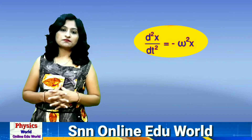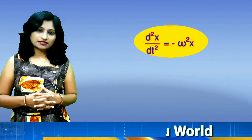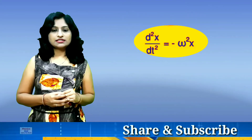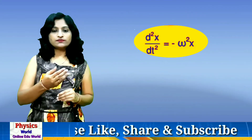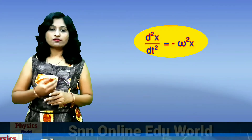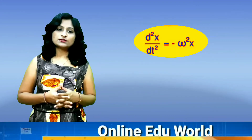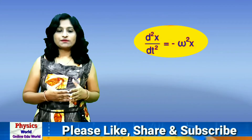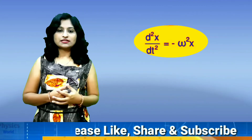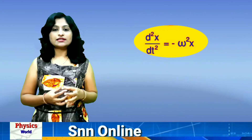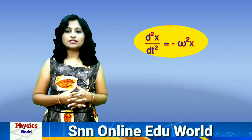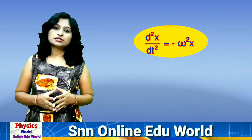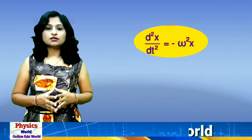Directly from this equation we can get the acceleration. d²x/dt², if we shift +ω²x to the other side, it will become -ω²x. So d²x/dt², which is nothing but the acceleration, equals -ω²x. This is the acceleration for simple harmonic motion.